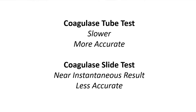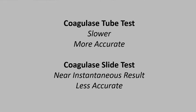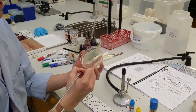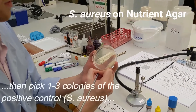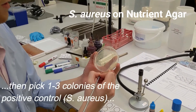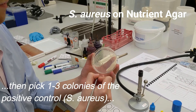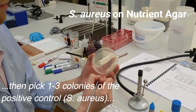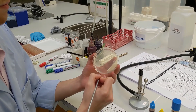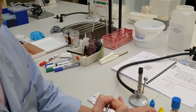Bacterial colonies are smeared on an agglutination card to which the fibrinogen-sensitised red blood cells are added. First, pick one to three colonies of the positive control Staph aureus, and smear these onto the agglutination card.